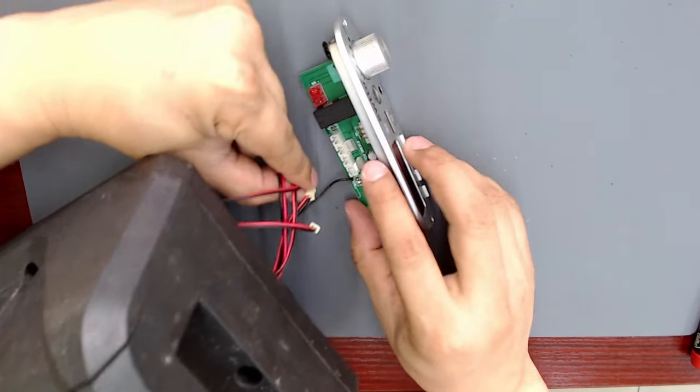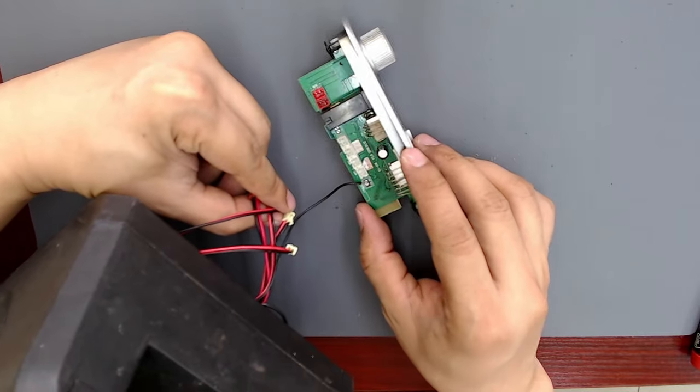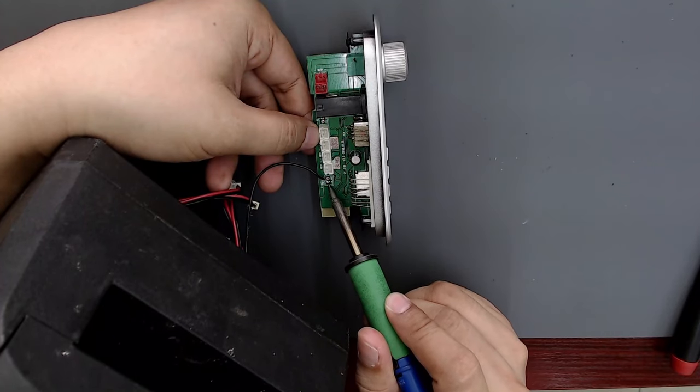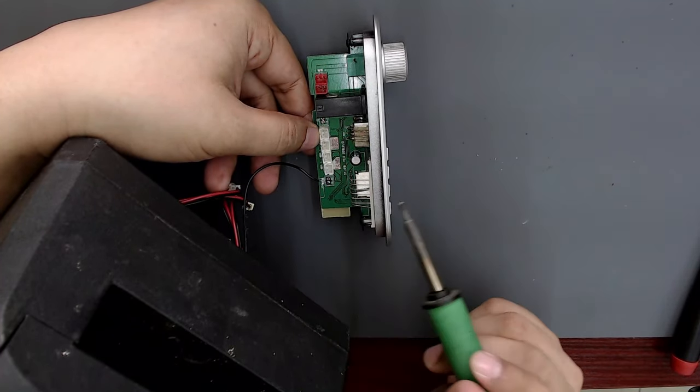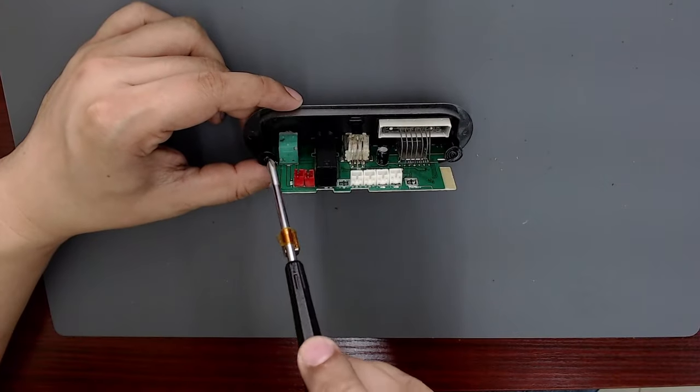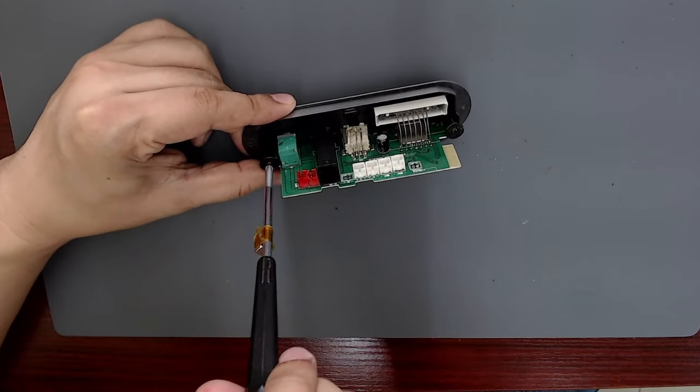This is the most common damage on these cheap Bluetooth speakers. One of the wires is soldered to the board. Therefore, I have to desolder the cable to separate the board and work comfortably.